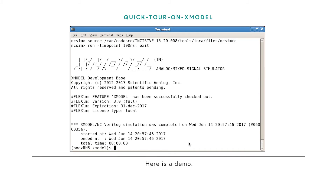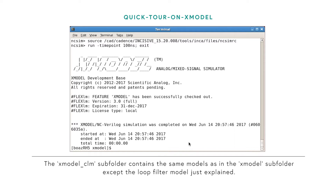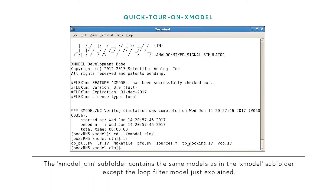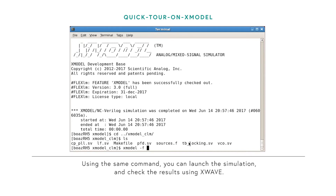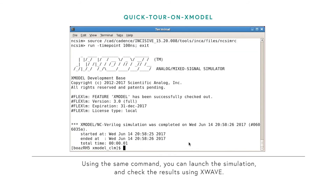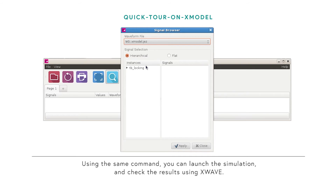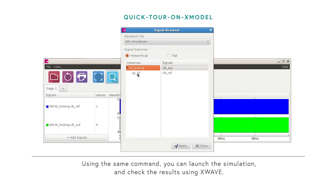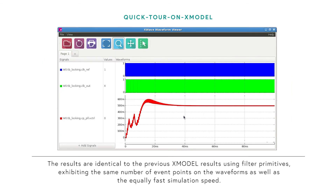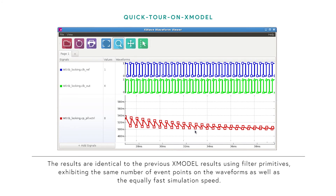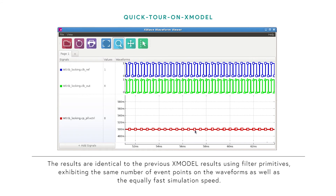Here's a demo. The X-Model underscore CLM folder contains the same models as in the X-Model folder, except for the loop filter model using circuit-level modeling. Using the X-Model command, you can launch the simulation and check the results using X-Wave. The results are identical to the previous X-Model results using filter primitives, exhibiting the same number of event points on the waveform as well as equally fast simulation speed.